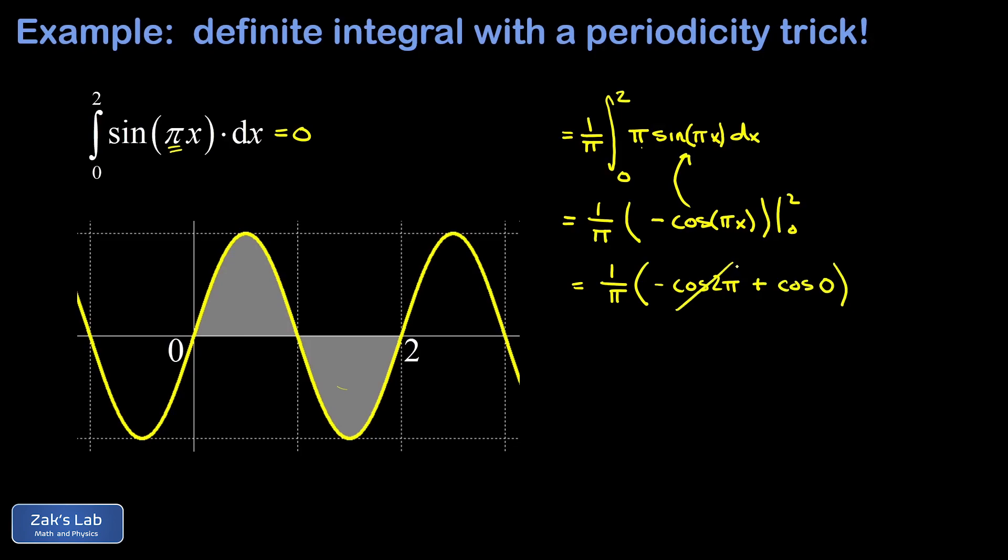Well, the cosine of 2 pi is 1, so this term becomes negative 1. The cosine of 0 is 1. So I end up with negative 1 plus 1, and that gives me 0. The same result that we got by exploiting the symmetry of the problem.